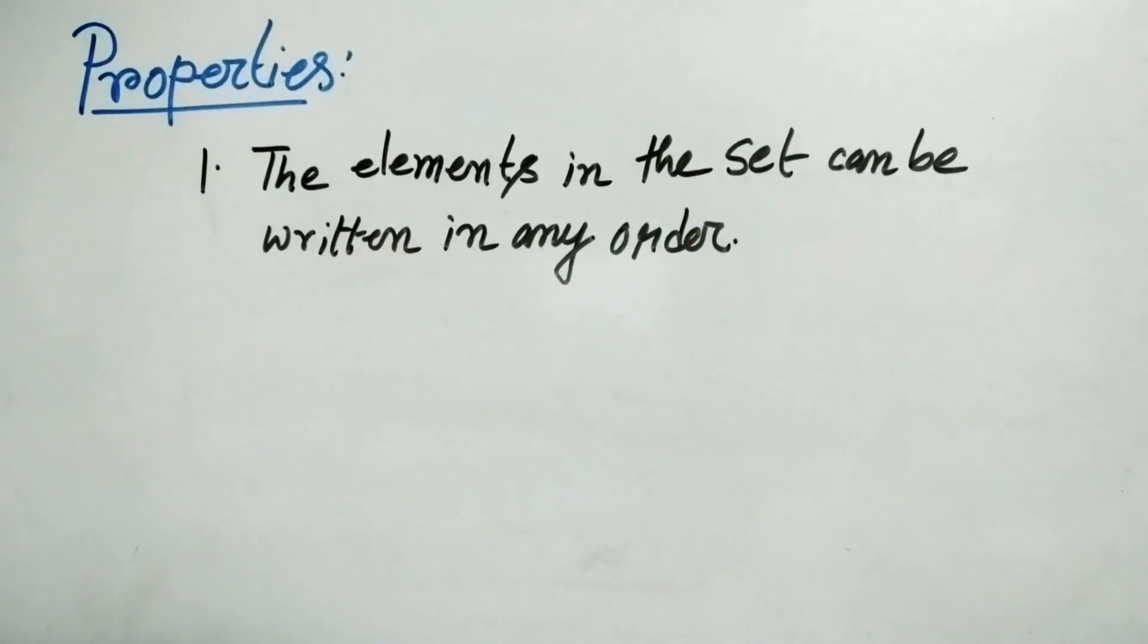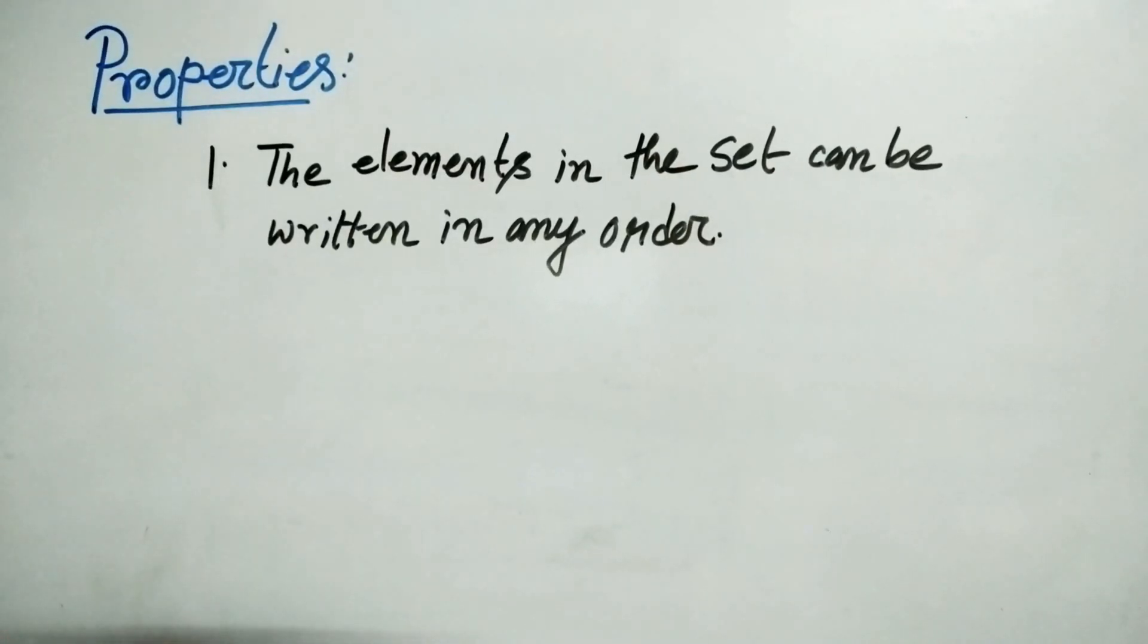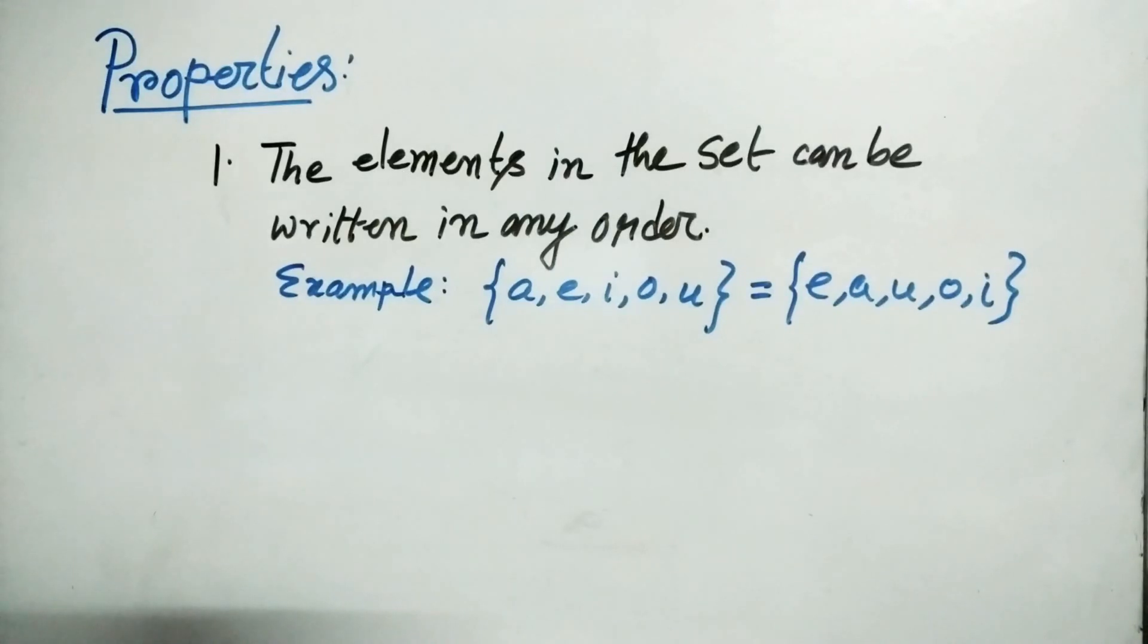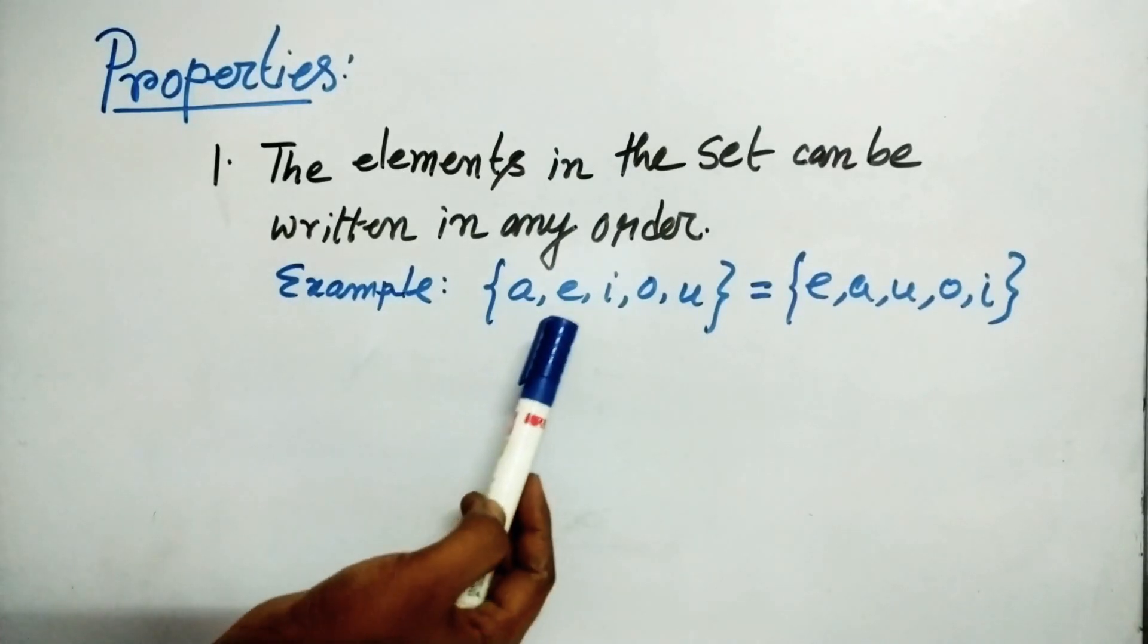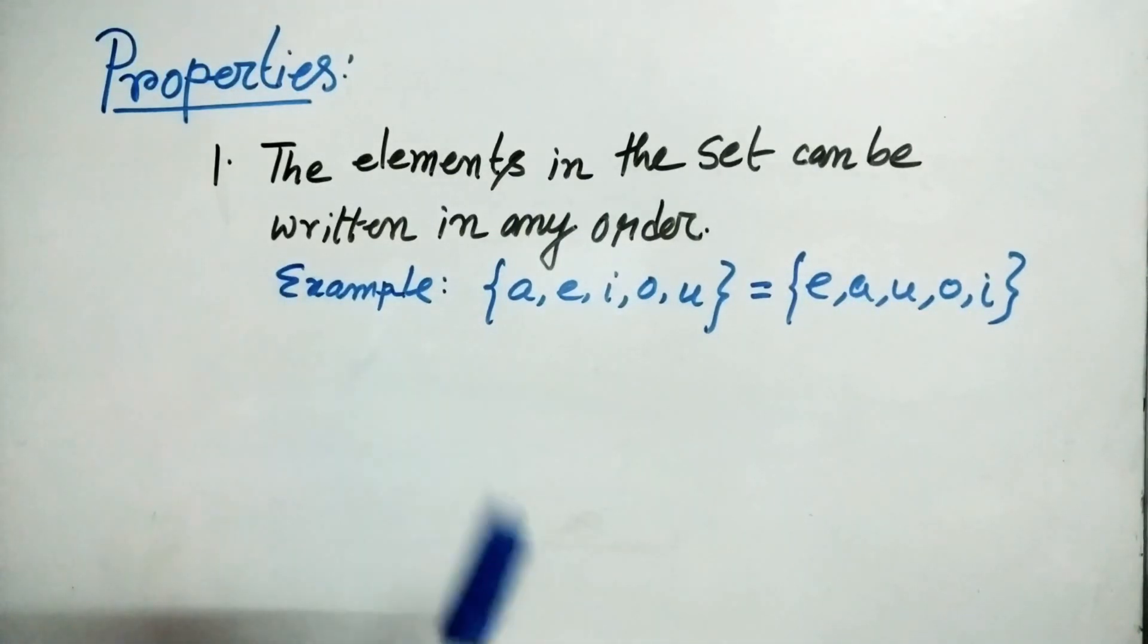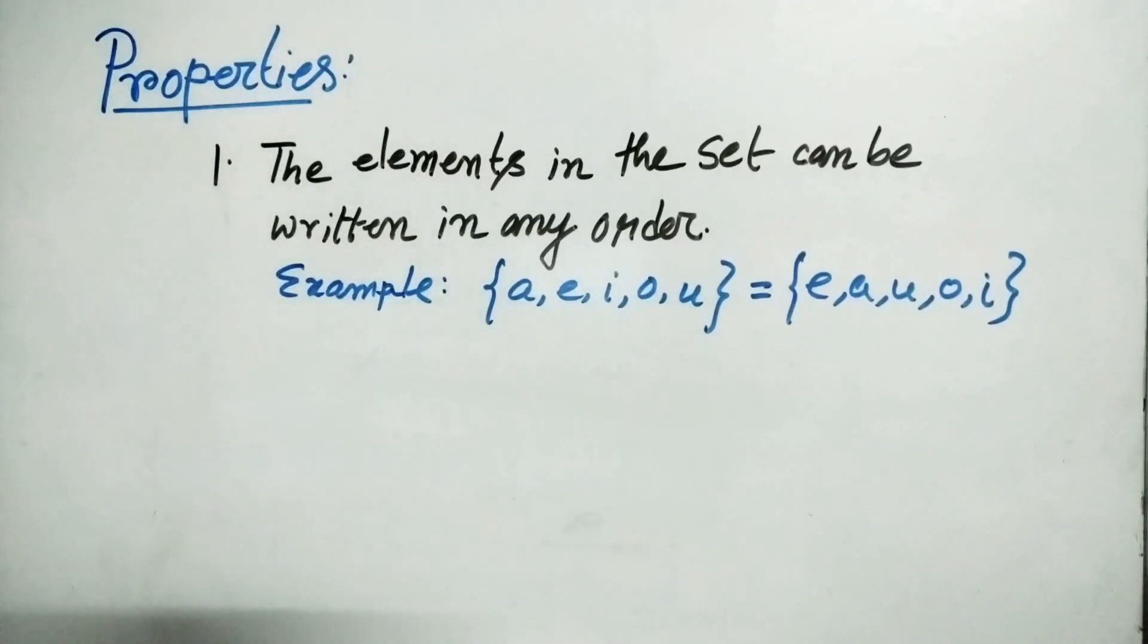So let's go for some properties. Property number one says that the elements in the set can be written in any order. For an example the set A E I O U. Now this set can be written in the form E A U O I or you could have taken another order that is E I O U A and so many.